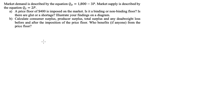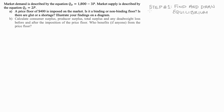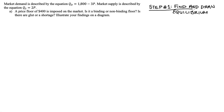Whether a price floor is binding or not will depend on where it sits in relation to the equilibrium point in the market. So let's start with step one: finding the equilibrium point and also drawing everything out. Equilibrium is defined where quantity demanded (Qd) is equal to quantity supplied (Qs). We have both of those functions in our question so we can just substitute those in.